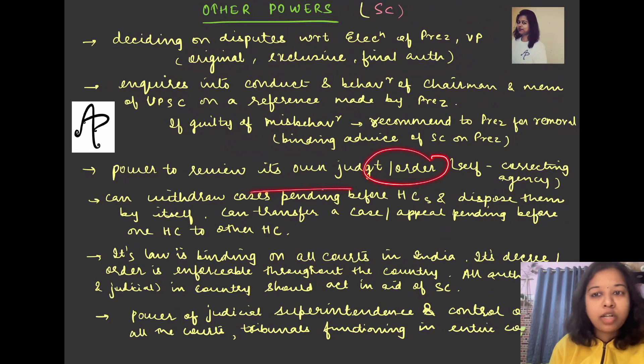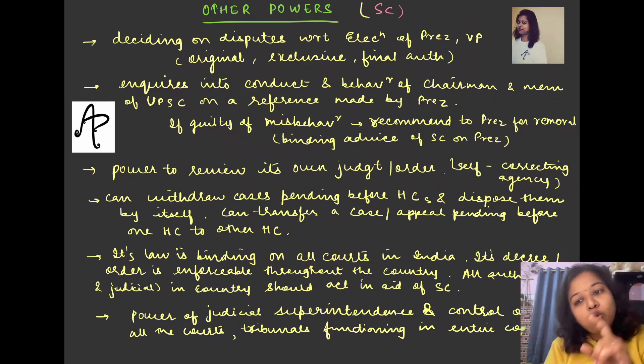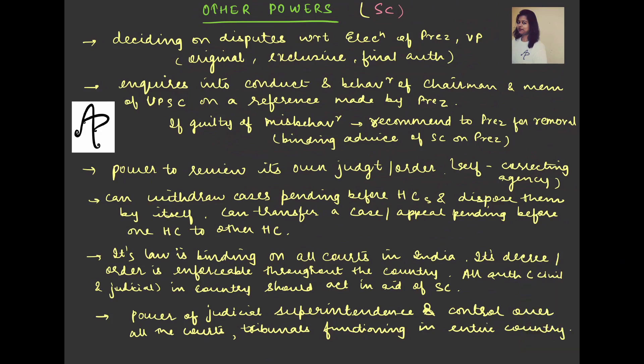Then power to review its own judgment or order. Self-correcting agency is working like self-correcting agency. It can withdraw the cases pending before High Courts. The law declared by Supreme Court is binding on all courts in India. That's why we have integrated judiciary, right? Any kind of decree or order coming from the Supreme Court is enforceable throughout the country. All the authorities, whether civil or judicial in the country, should act in helping the Supreme Court. And then power of judicial superintendents and control over all courts, tribunals functioning in the entire country.